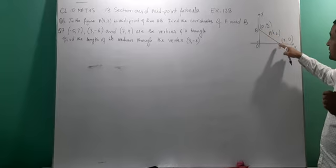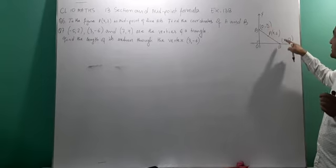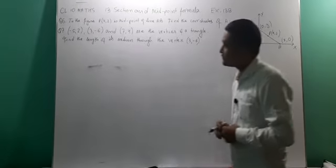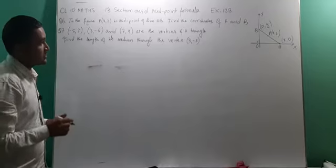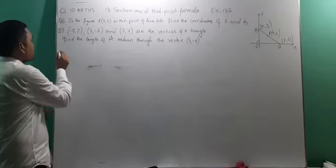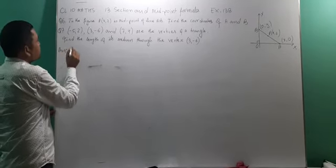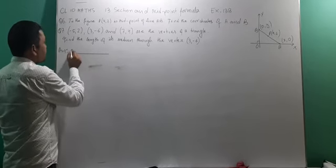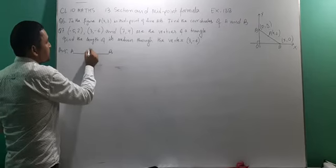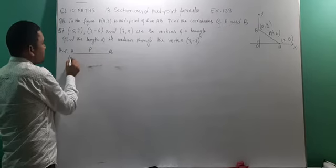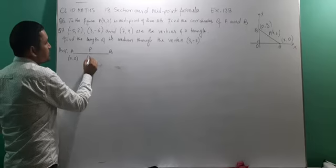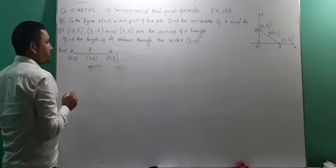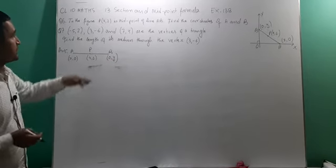From this figure we will get the value of these coordinates x and y. Now let me solve — I will explain by solving these questions. Here, let me draw the same line segment: A, B, then their midpoint is P. A is how much? x comma 0. B is given as 4 comma 2, and B is also given as 0 comma y. Now, it is already written midpoint.